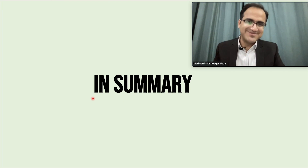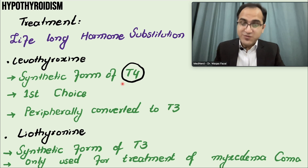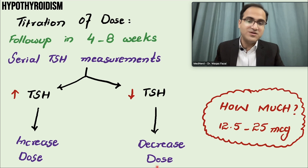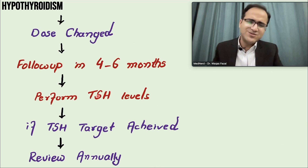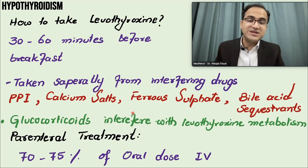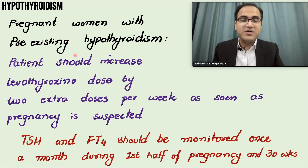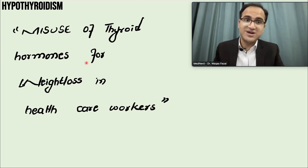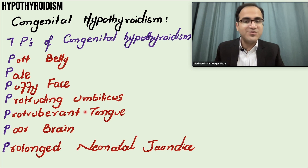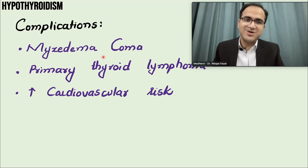Summary: Levothyroxine (T4, long half-life) is the commonly prescribed drug given once daily. Liothyronine is used only in myxedema coma (short half-life). Levothyroxine dose in healthy patients: 1.6 mcg/kg. Follow up in 4 to 8 weeks; if TSH is high increase the dose, if low decrease it. After a dose change, follow up in 4 to 6 months; if target is achieved, review annually. Take levothyroxine before breakfast, not with other medications. Increase dose at first sign of pregnancy. Congenital hypothyroidism: protruding belly, umbilicus, tongue, and prolonged neonatal jaundice. Main complication: myxedema coma.